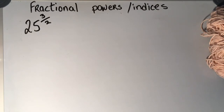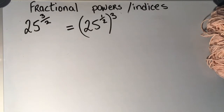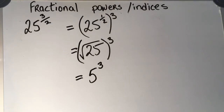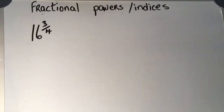Now, what happens with a problem like this: 25 to the power of 3 over 2? I need to evaluate this without a calculator. Using the rule that one power raised to another power multiplies the indices, I write 25 to the power of 3 over 2 as 25 to the power of 1 half, all to the power of 3. The power of 1 half means square root, and the square root of 25 is 5. So my answer is 5 to the power of 3, which is 125.